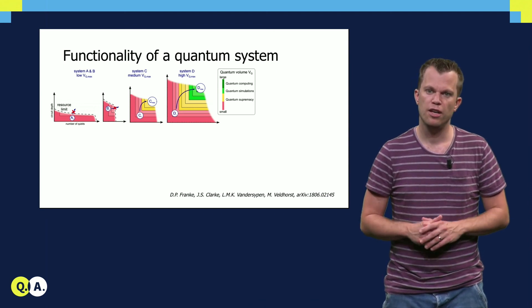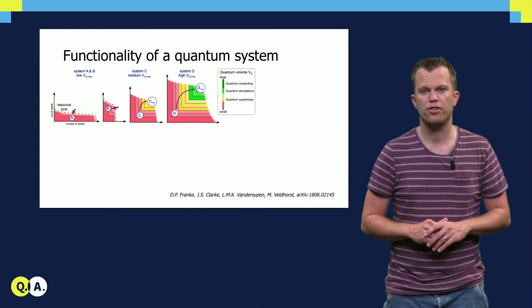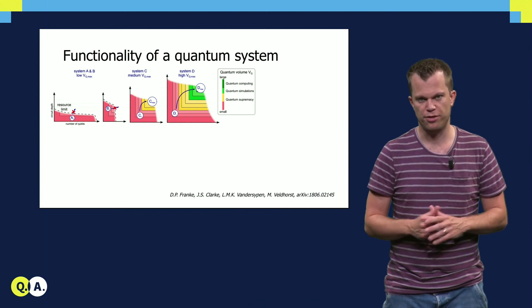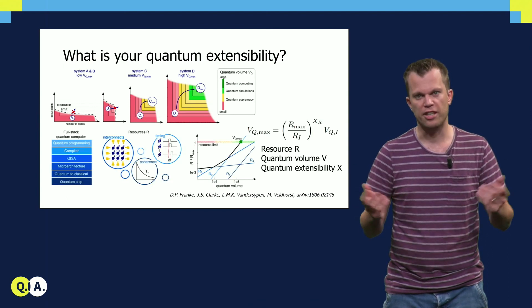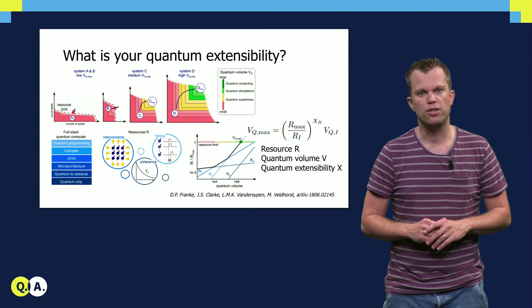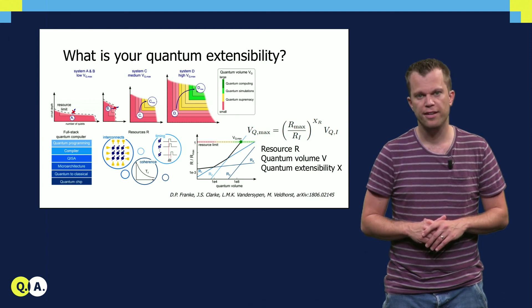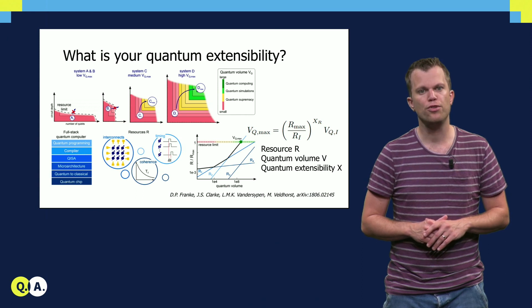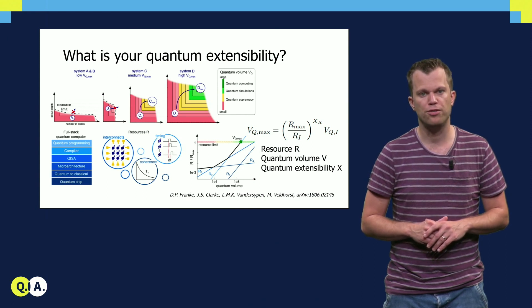Nonetheless, while this is certainly a useful metric, the quantum volume does not provide the information whether a system is capable of reaching these applications. The scalability aspect is described by the quantum extensibility of a system. Depending on all the resources required at every position of the stack, a platform has the capability to scale up toward practical quantum information. Defining these resources is a crucial aspect for quantum information research today.